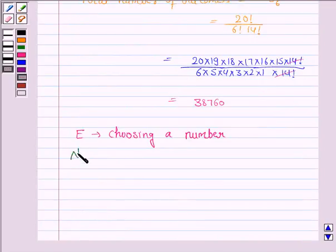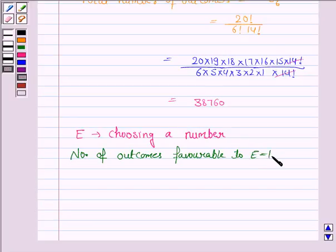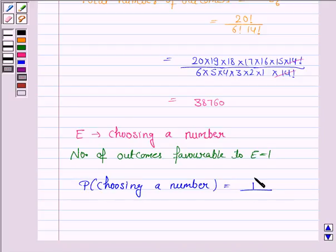The probability of choosing one such number is equal to the number of outcomes favorable to E upon the total number of outcomes. So the probability is 1 upon 38,760.